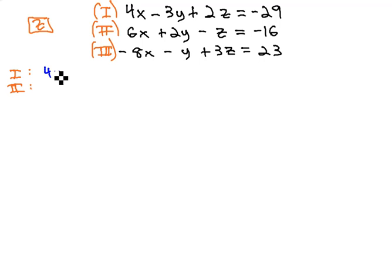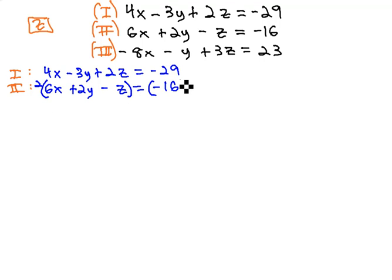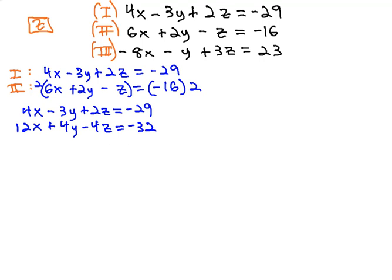Equation 1 was 4x minus 3y plus 2z equals negative 29. Equation 2 was 6x plus 2y minus z equals negative 16, and we said we could eliminate the z by multiplying that second equation by 2. The first equation's unchanged. It's still 4x minus 3y plus 2z equals negative 29. The second equation is now 12x plus 4y minus 4z equals negative 32, and we're ready to combine these together.